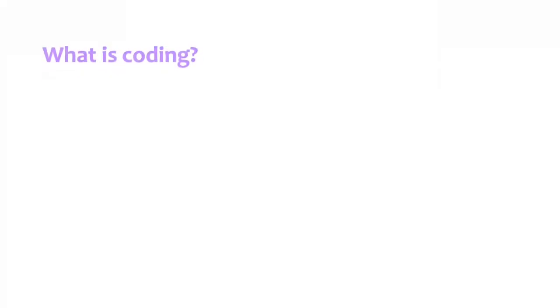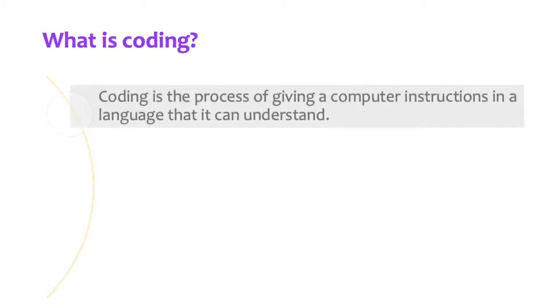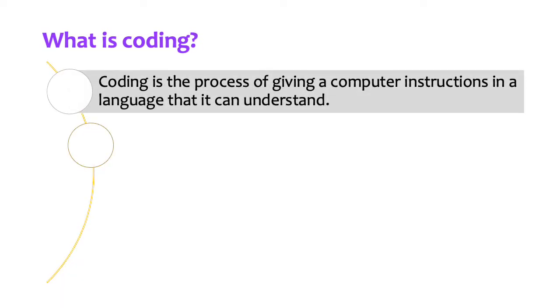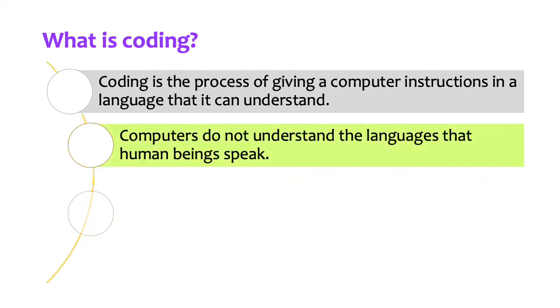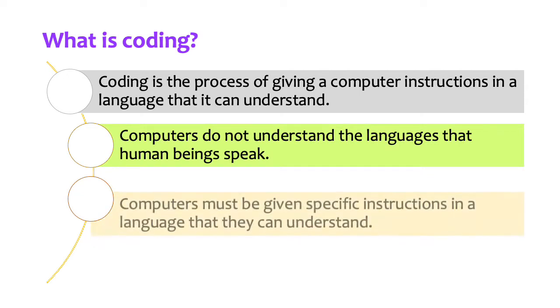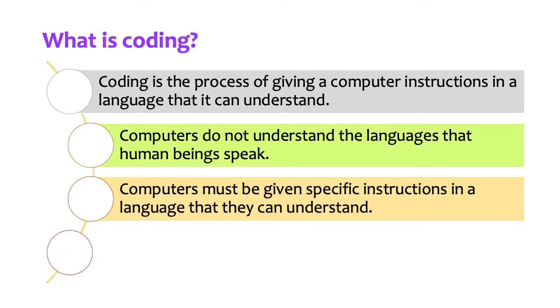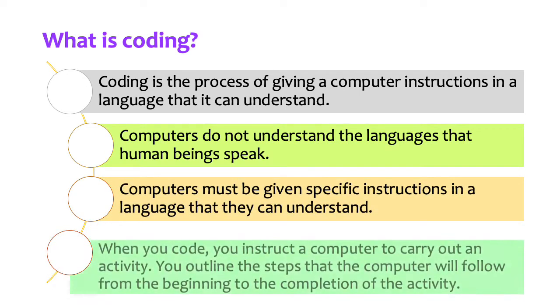What is coding? Coding is the process of giving a computer instructions in a language that it can understand. Computers do not understand the languages that human beings speak. Computers must be given specific instructions in a language that they can understand.